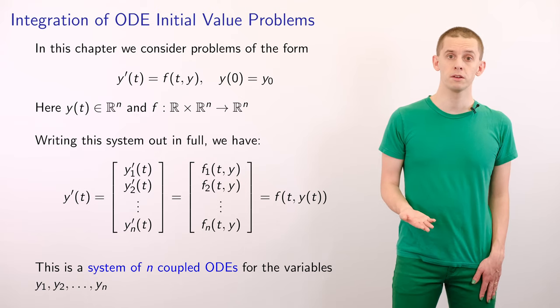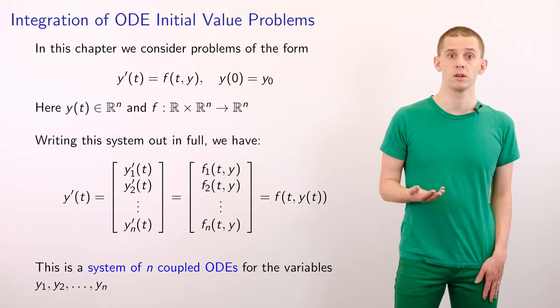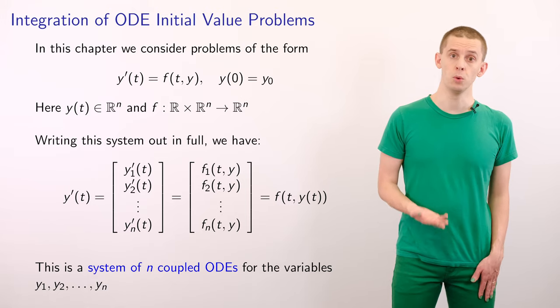And we could write this system in full, and we would have that y prime of t is equal to a vector with components y 1 prime to y n prime.